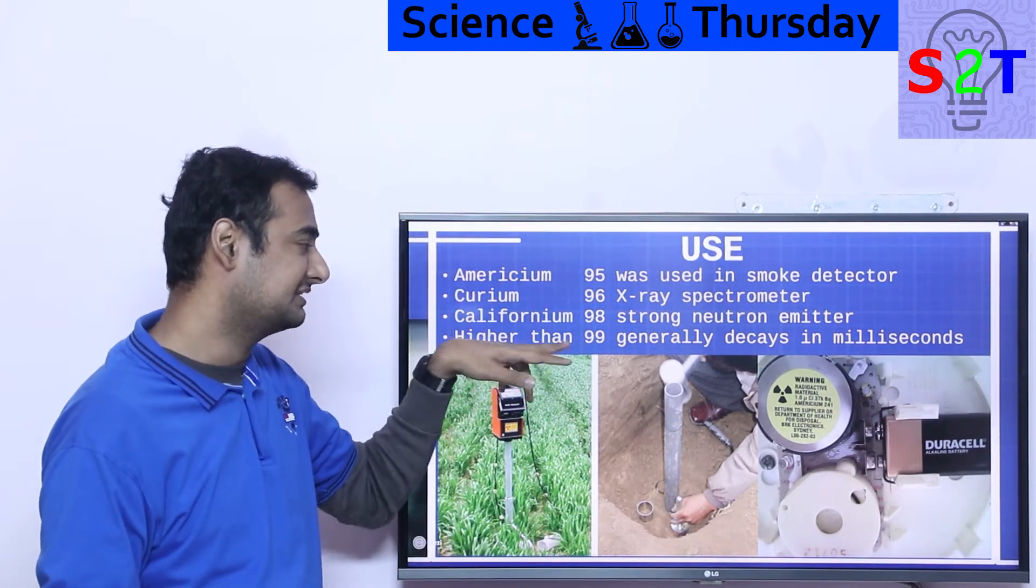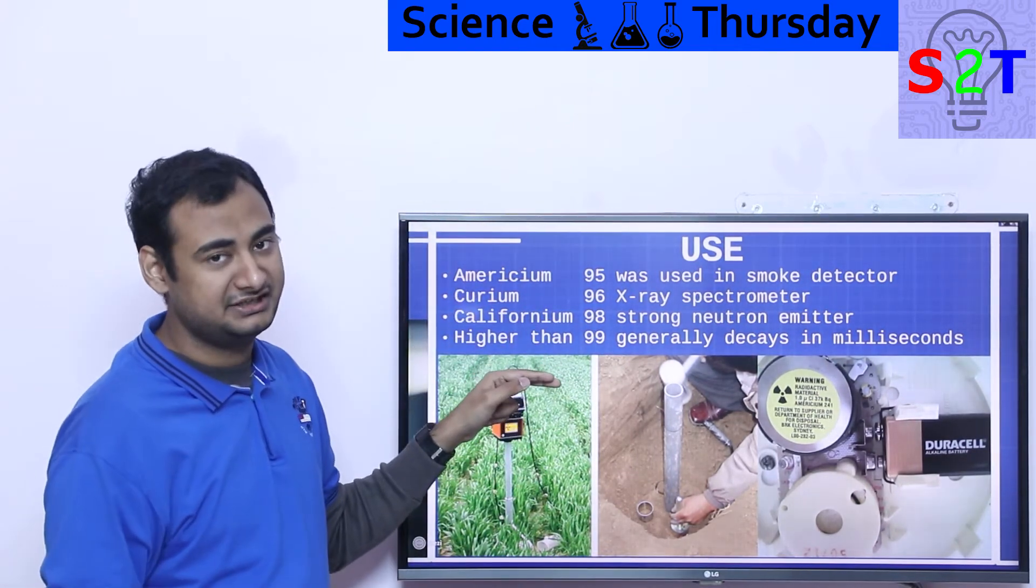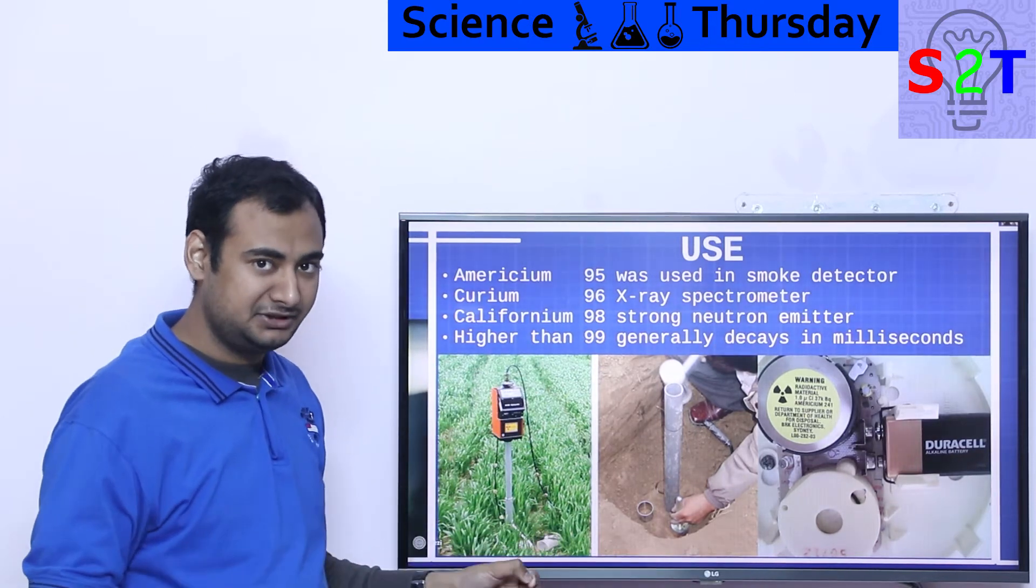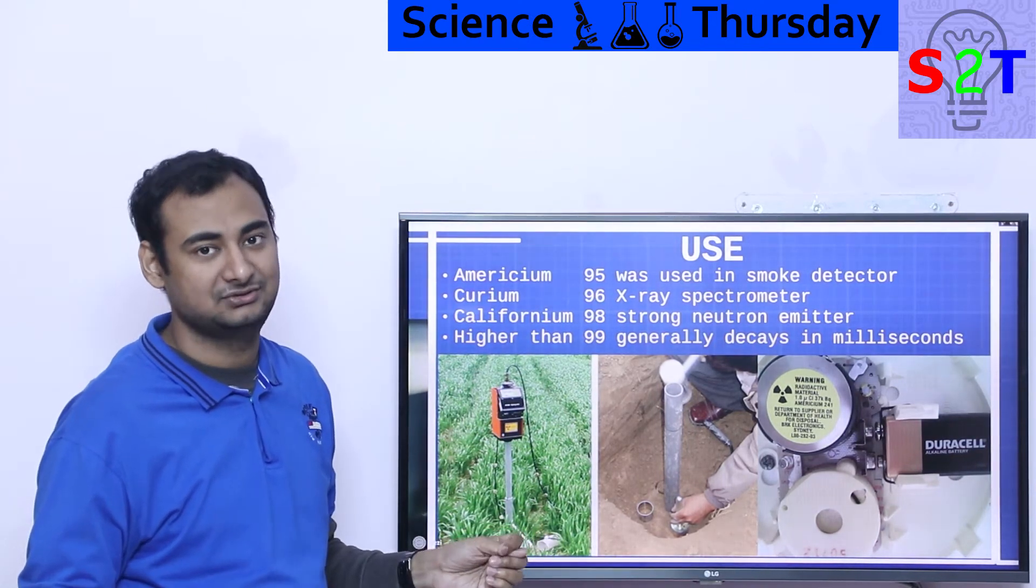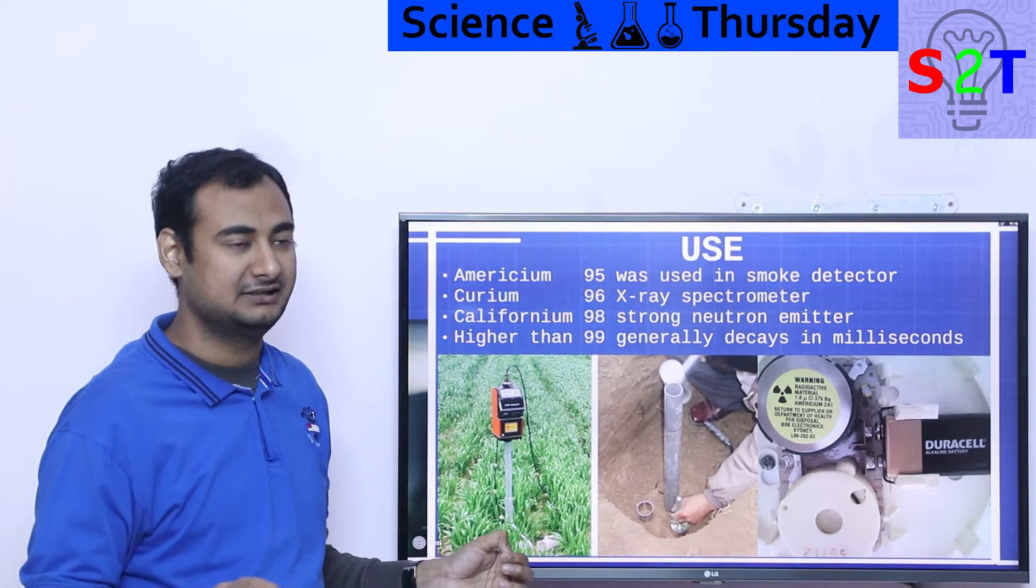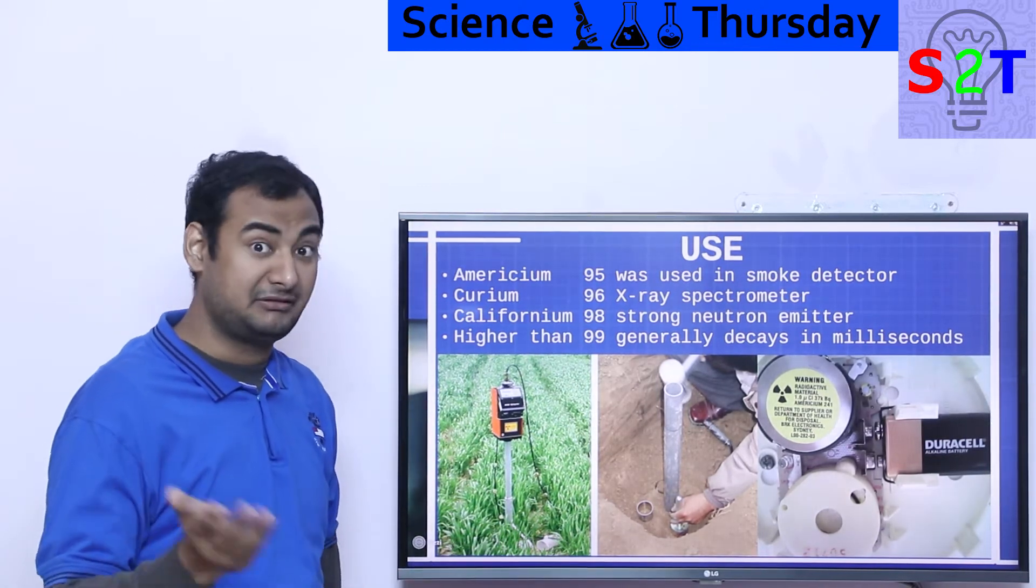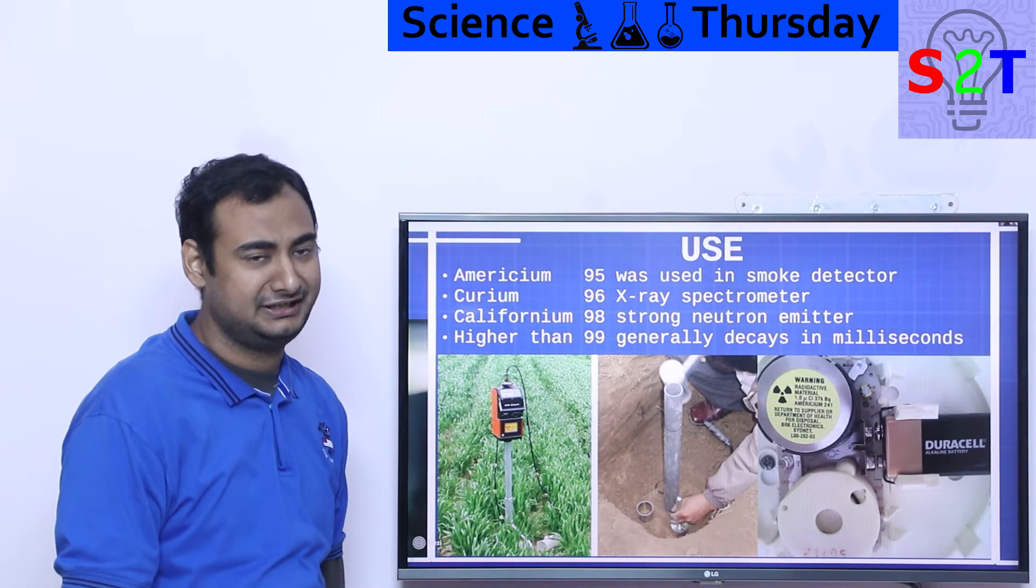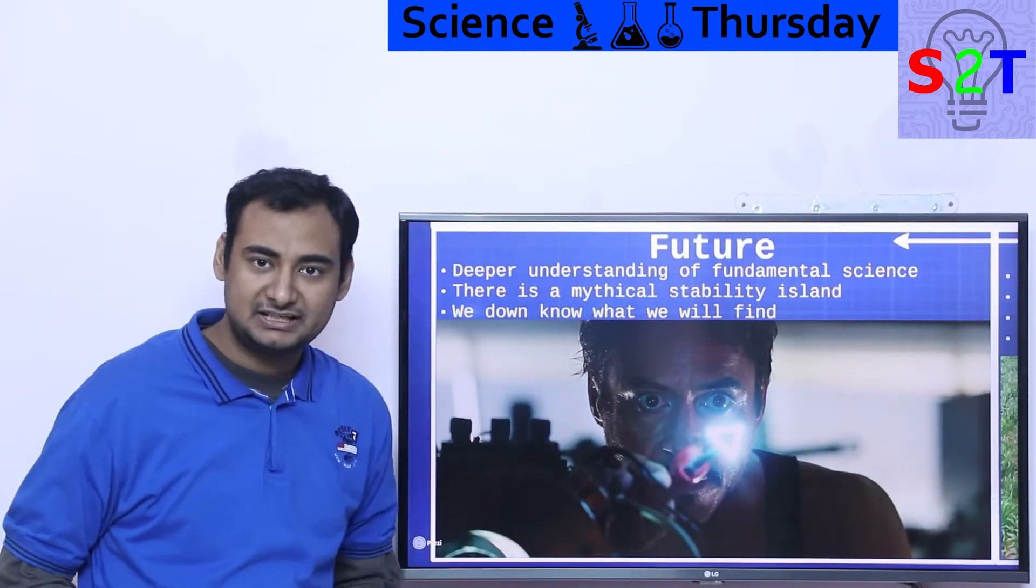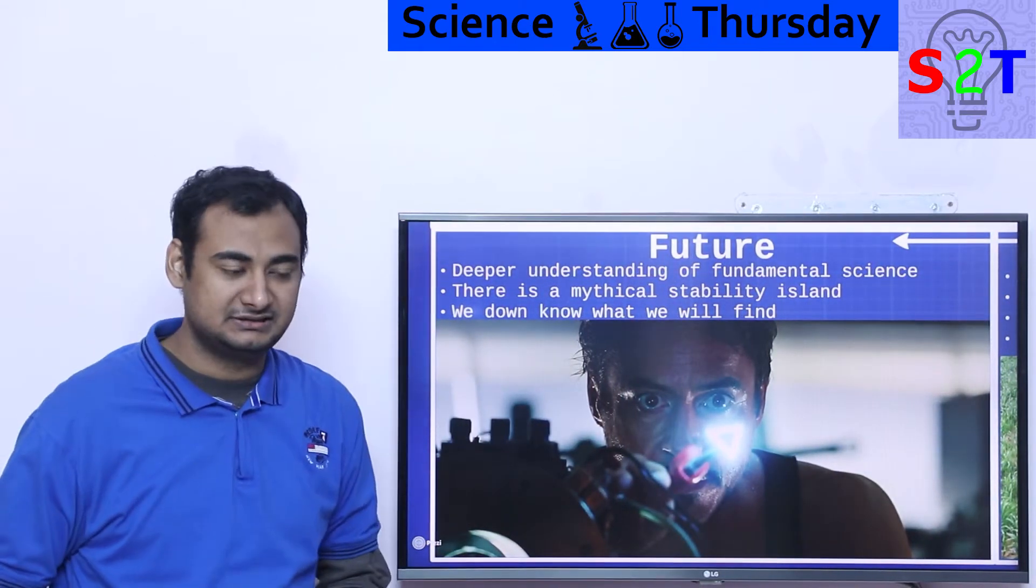Sometimes they are used as igniters for reactors. But the moment you start to reach 99, everything you create at this point in time they do not have half-lives that are useful. Their half-life is millisecond, nanosecond, femtosecond, so fundamentally it becomes useless after that point in time. What we can expect in the future - you have to understand this.